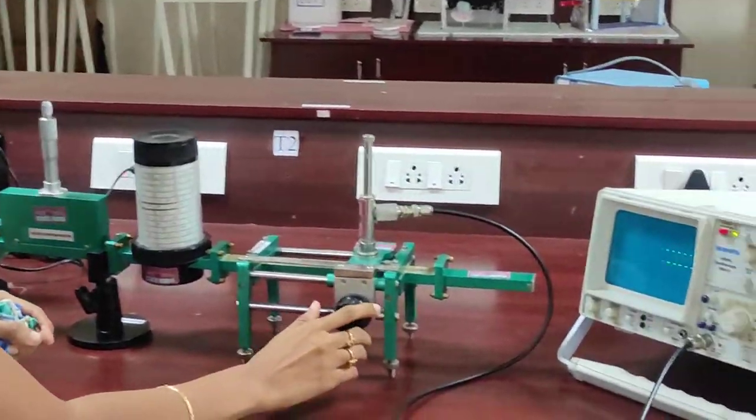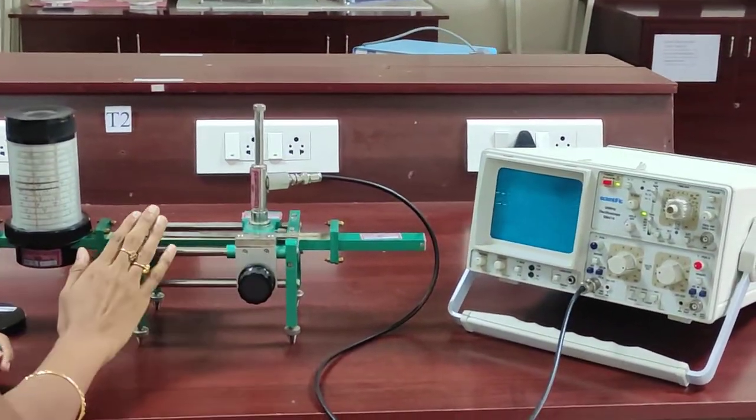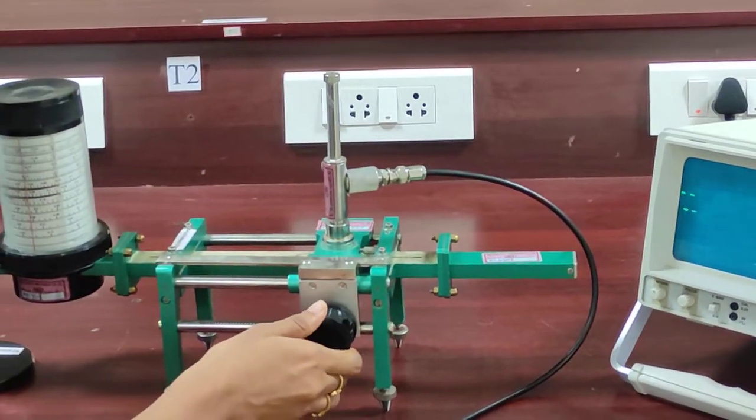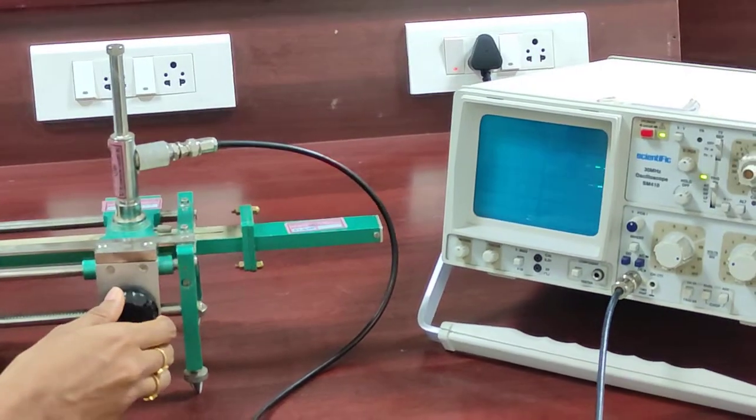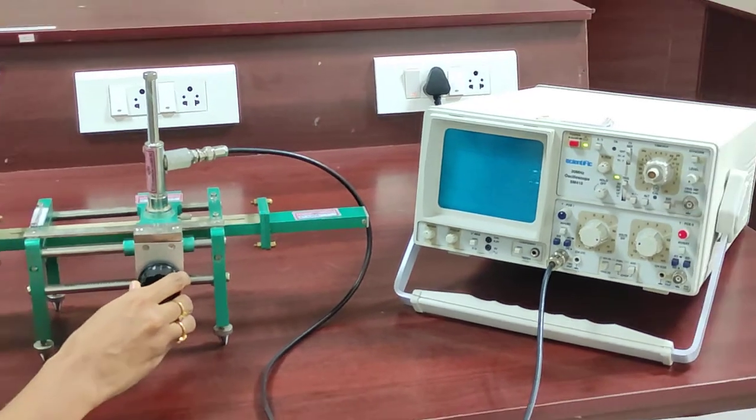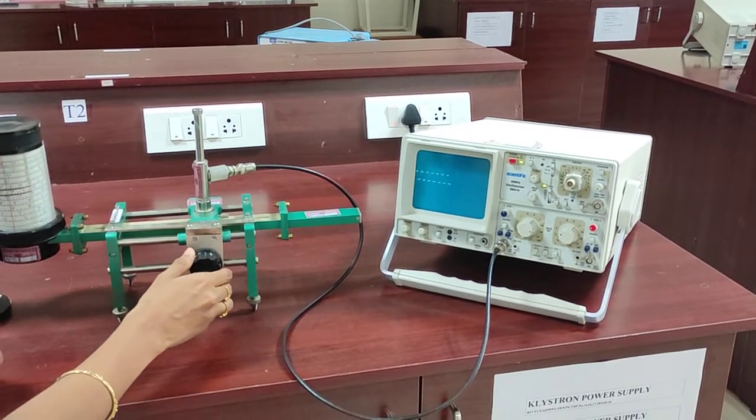See, keep this slotted line section in maximum position. We are going to make two measurements. One is maximum, another one is minimum. Look at this CRO carefully.